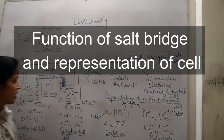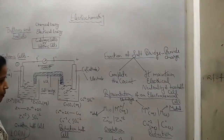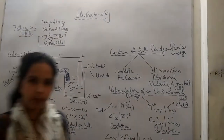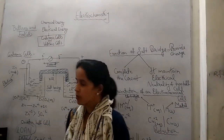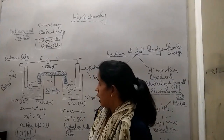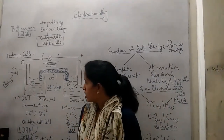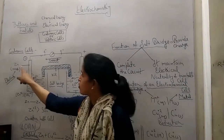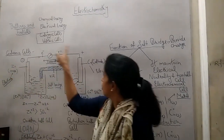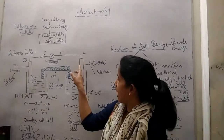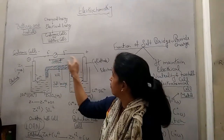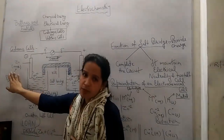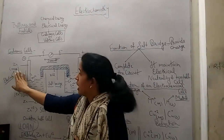Hello students. Today I will complete the topics which I left in my previous video. I told you that electrons move from zinc to copper, and electricity or current flows from copper to zinc.